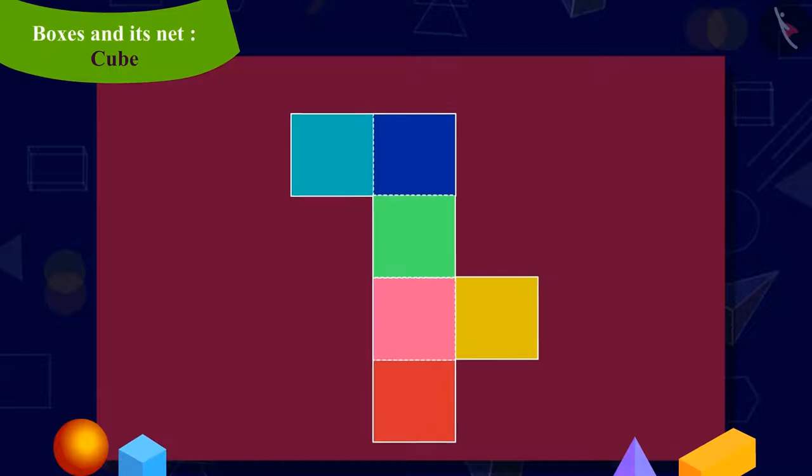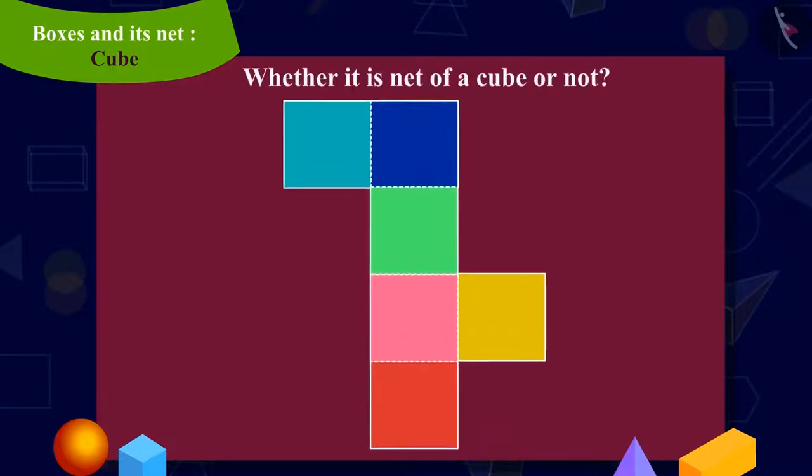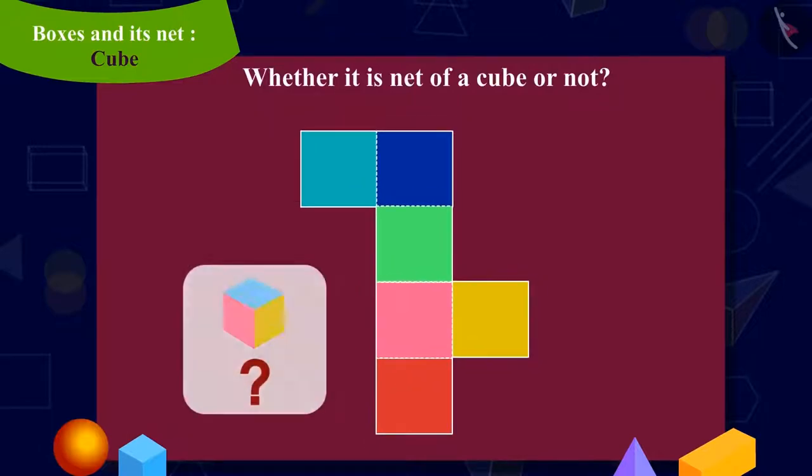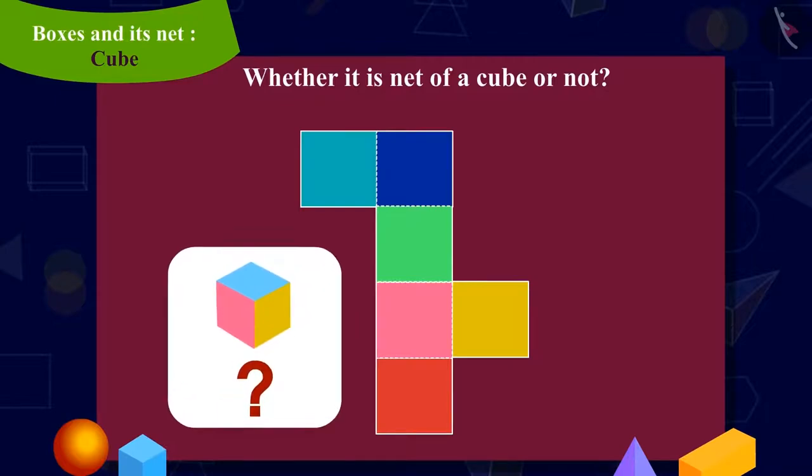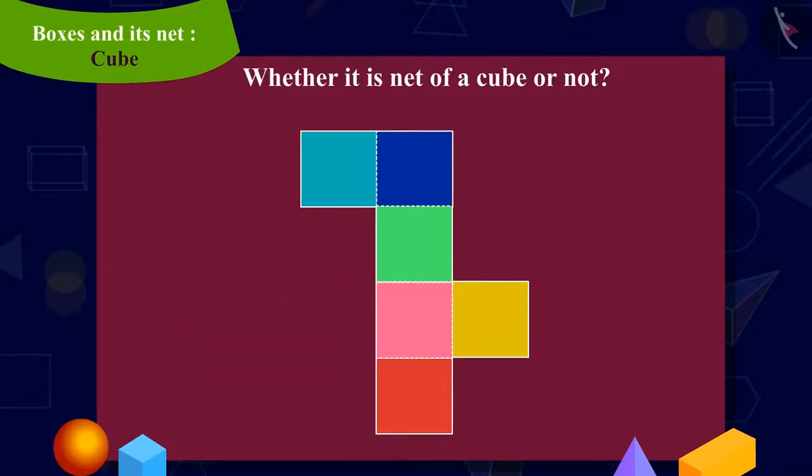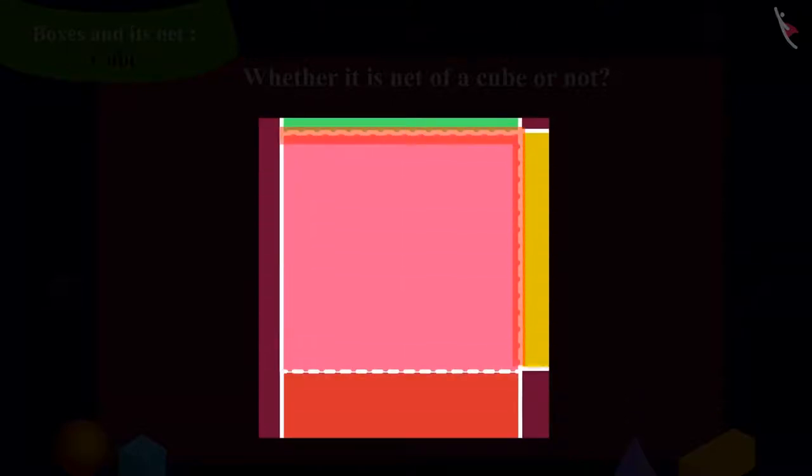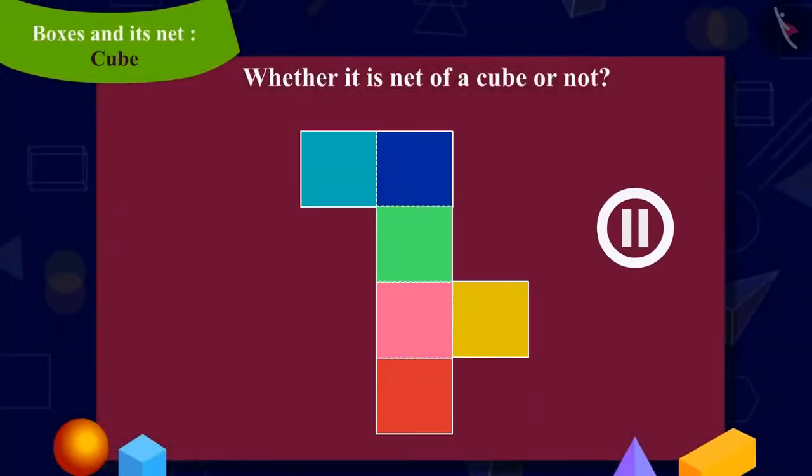Kids, can you look at this shape and tell whether it is a net of a cube or not? In other words, can we make a cube-shaped box by folding this shape on these dotted lines? You can pause the video to find the answer.